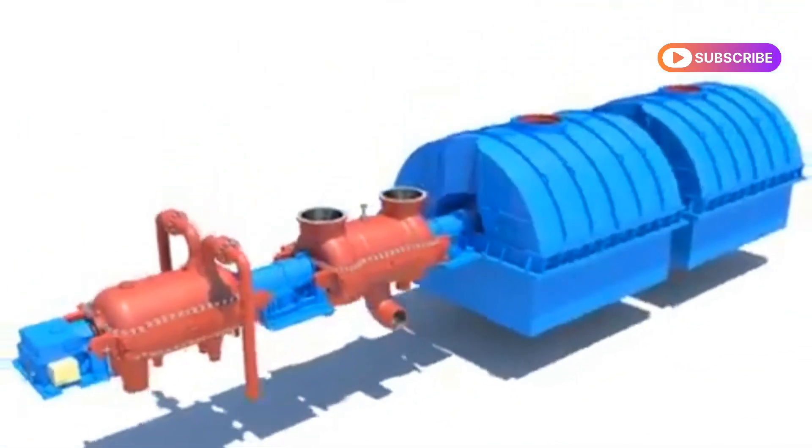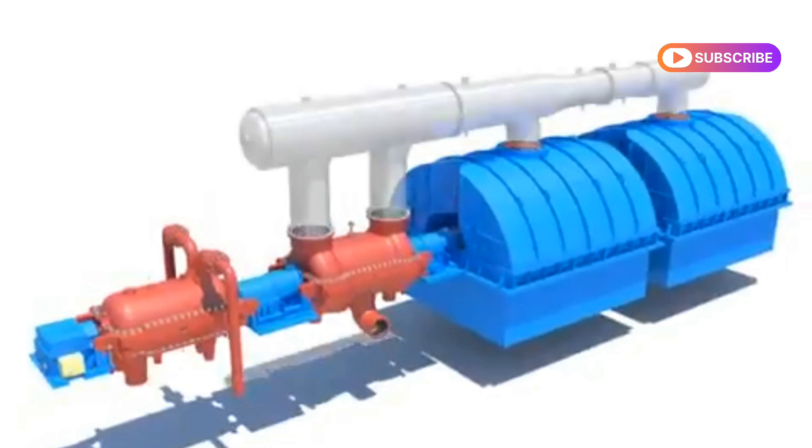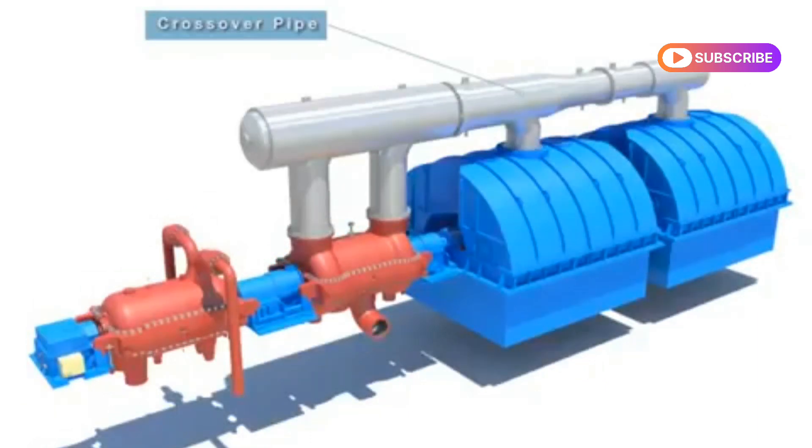The crossover pipe is a steam path to send the intermediate pressure turbine exhaust to the low pressure turbine.